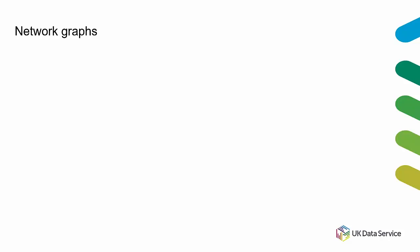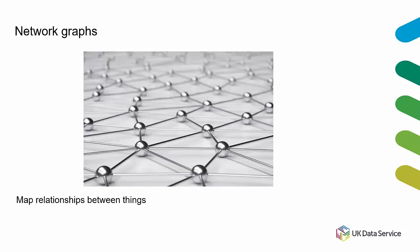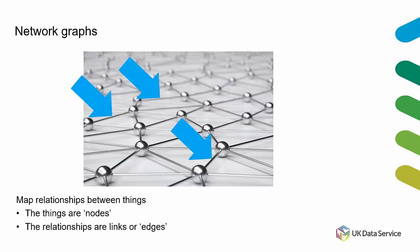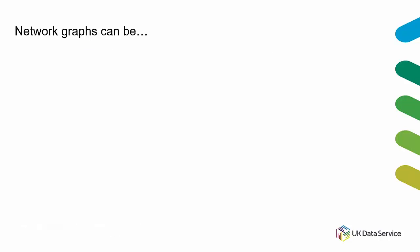Now let's move on to network graphs. Network graphs are like a map of relationships between things. The things — usually called nodes — can represent just about anything: people, businesses, cities, social movements, rock bands. The relationships between those things are called links or edges, and they can represent any kind of relationship — social, financial, influence, or oppositional relationships like competition.